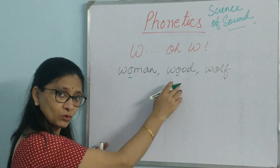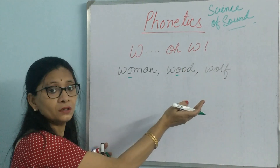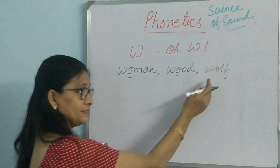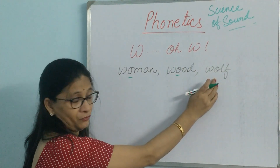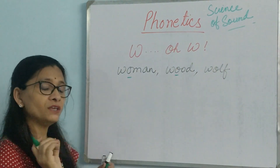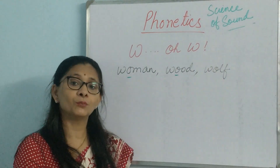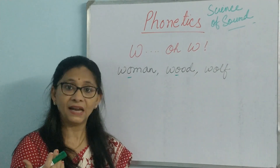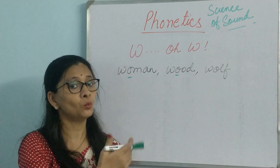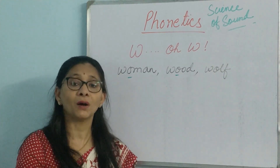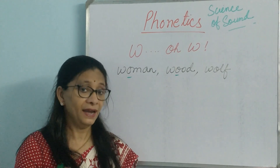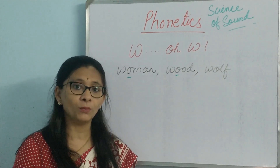It becomes 'wood' — which is wrong again. It should be 'would'. Similarly, 'wolf' becomes 'old' whereas it should be 'wolf'. That is what I want to focus on: since the clarity of W pronunciation is not there, the pronunciation of all words beginning from W gets jeopardized. It is high time that we address these basic problems.